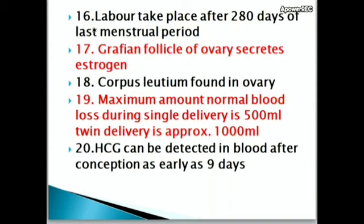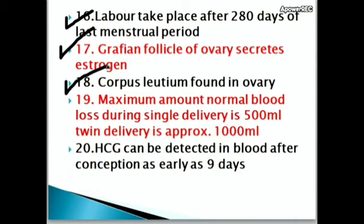Labor takes place after 280 days of the last menstrual period. Graafian follicle of the ovary secretes estrogen. Corpus luteum is found in the ovary. Maximum amount of normal blood loss during a single delivery is 500 ml; for twin delivery it is approximately 1000 ml.